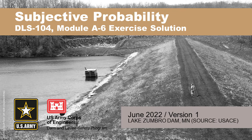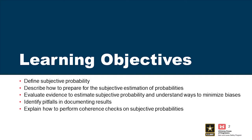On to subjective probability, now that we've gotten through the PFMA and screening portions. The objectives of this module are to define what subjective probability is, describe how to prepare for subjective estimation of our probabilities, evaluate evidence to estimate these probabilities, understand ways to minimize bias, look for any pitfalls in how we document the results, and explain how to perform coherence checks on our subjective probabilities.